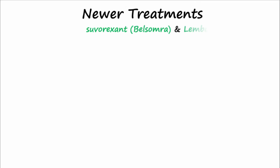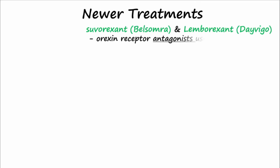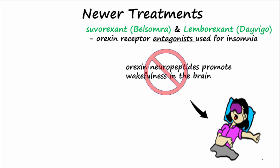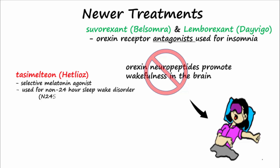Suvorexant and lemborexant are orexin receptor antagonists used in the treatment of insomnia. The orexin neuropeptide signaling system promotes wakefulness; by blocking the receptors for orexin, these antagonists suppress the wake drive to cause sleep. Tasimelteon is a selective melatonin agonist used to treat non-24-hour sleep-wake disorder (N24-SWD), a disruption in circadian rhythms due to misalignments with the light-dark cycle, which most often occurs in blind individuals.